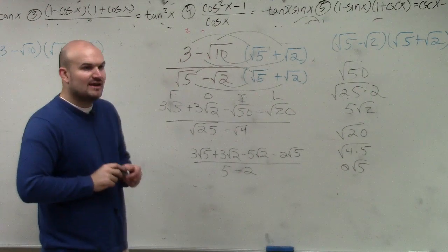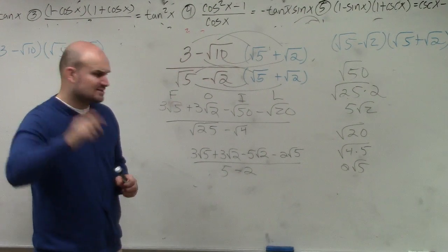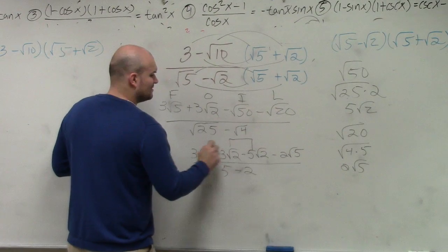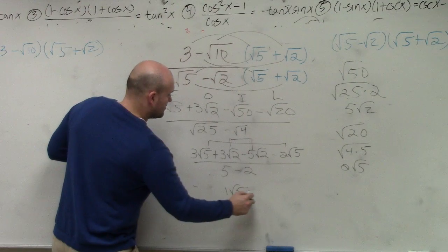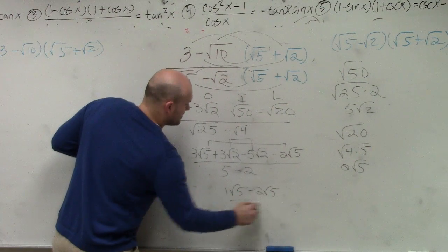Can I now, do these now have like terms? Hold on, please. Do these now have like terms that combine? Excuse me, so 3 square root of 5 minus 2 square root of 5 is 1 square root of 5, all over 3.